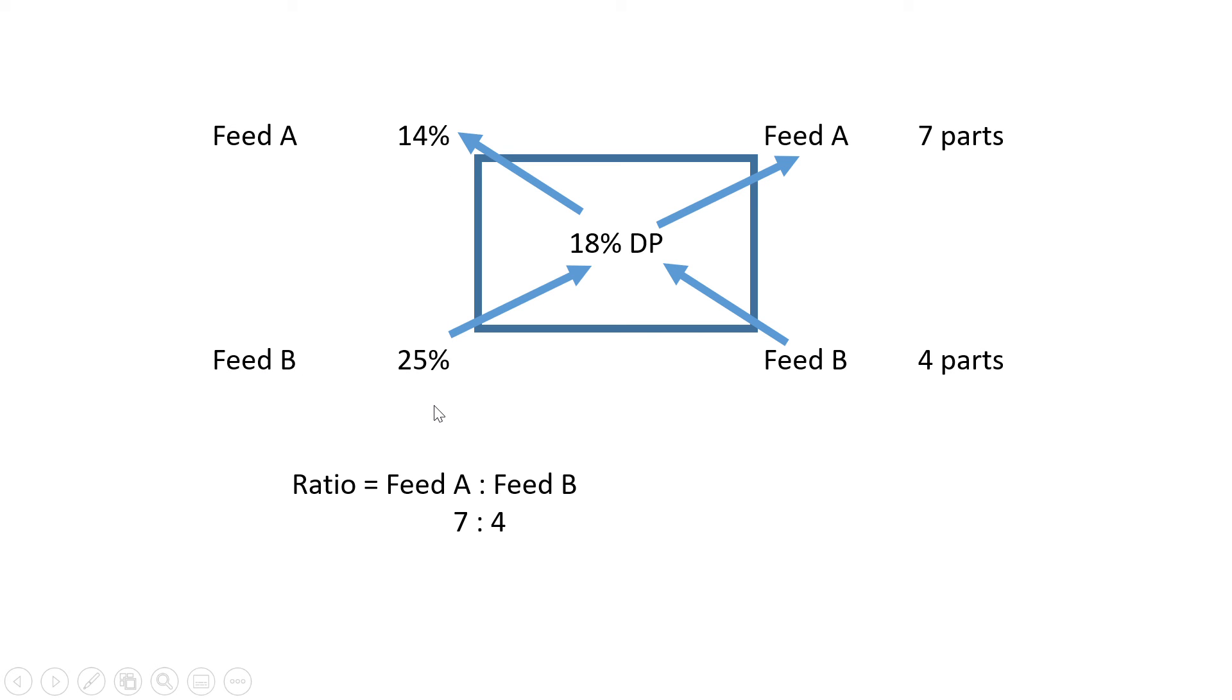At this side of the square, we want to figure out the parts—how many pieces of this ration is Feed A and how many pieces are Feed B. To get these two values, you literally take this value from Feed B, bring it up, and minus it from 18.